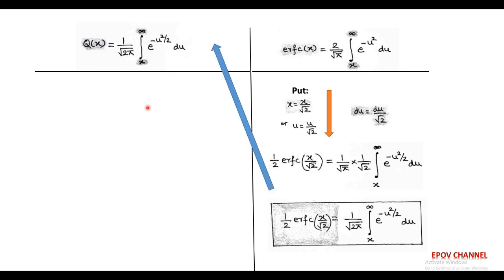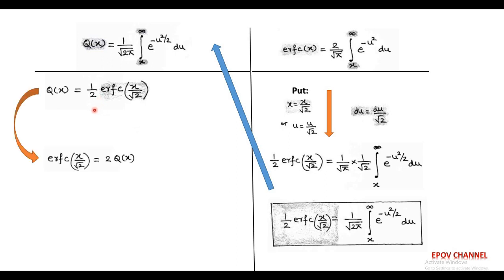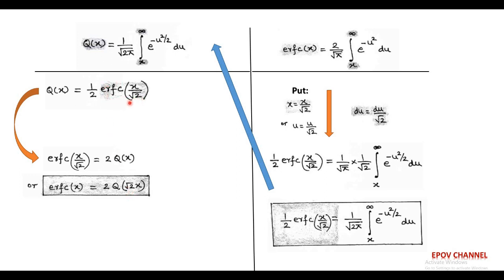So, Q(x) = ½ · erfc(x/√2), or equivalently, erfc(x/√2) = 2Q(x). Also, in place of erfc(x/√2) we can write 1 − erf(x/√2), establishing the relationship between the error function and the Q-function.